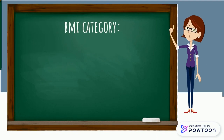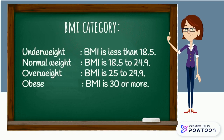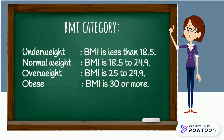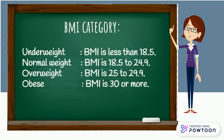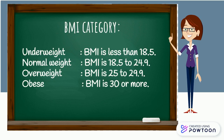BMI categories: Underweight — BMI is less than 18.5. Normal weight — BMI is 18.5 to 24.9. Overweight — BMI is 25 to 29.9. Obese — BMI is 30 or more.